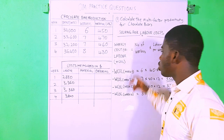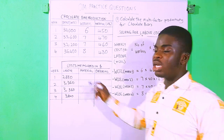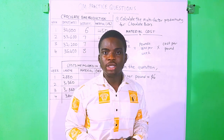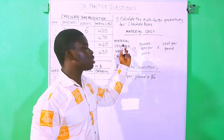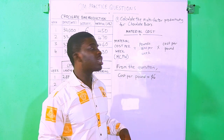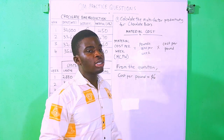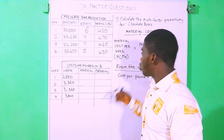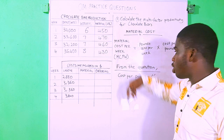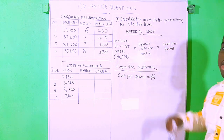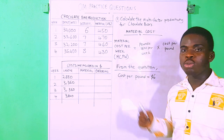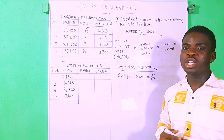Moving on, we take a look at the material cost. The material cost per week (MCPW) is given as the pounds used per week times the cost per pound. The pounds used per week were given in the question — 450, 470, and so on — and the cost per pound from the question was given as $6. Let's substitute these values and solve for each week.